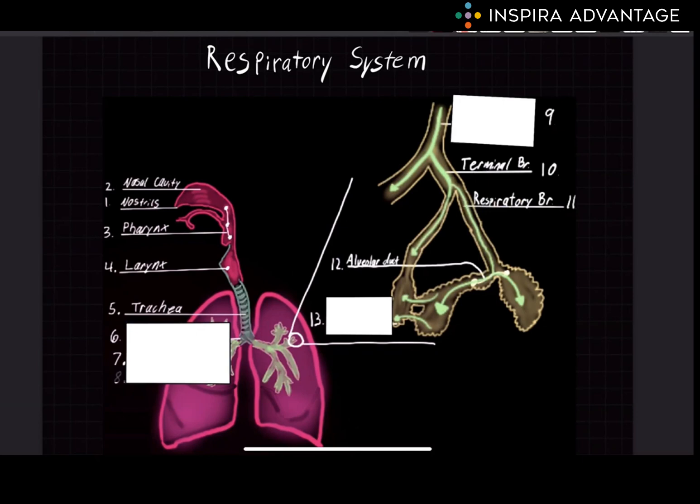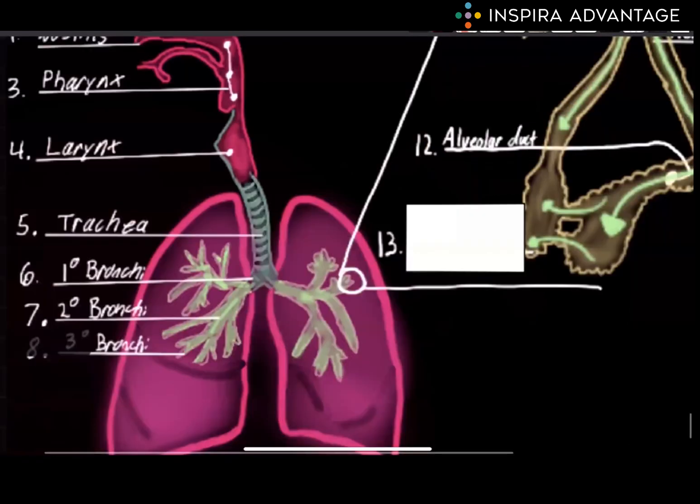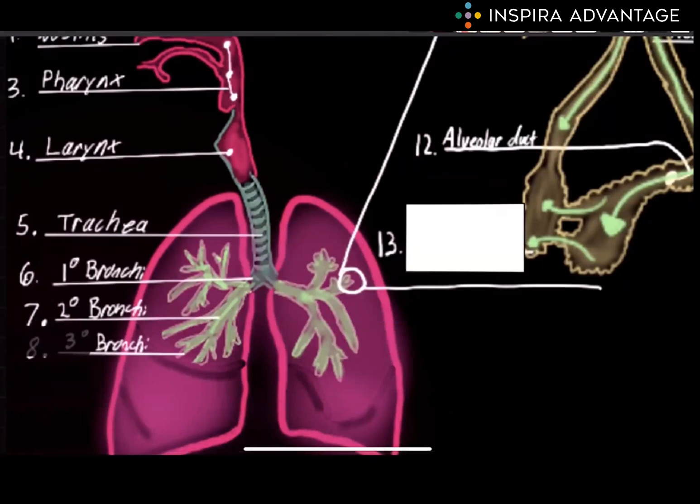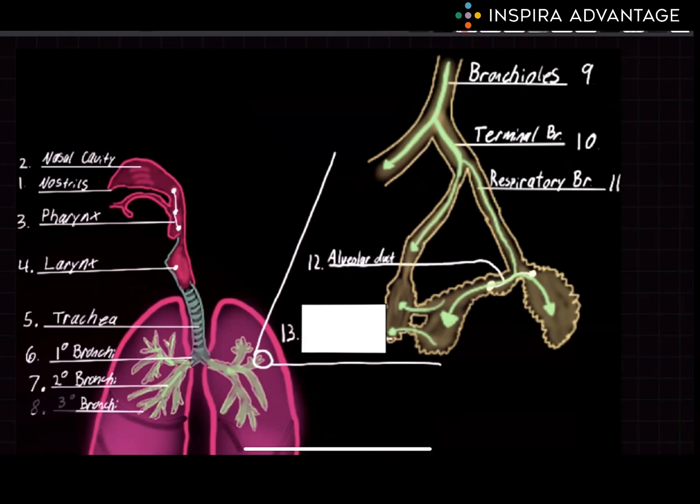Next, we have the bronchi. There are three on the diagram I drew here, but the MCAT only expects you to know the first, just to know that they're all bronchi. The bronchi are two tubes that branch off from the trachea and carry air into the lungs. The bronchi are divided into smaller tubes called bronchioles, which we'll zoom into on the right here. Bronchioles are responsible for distributing air to the alveoli.